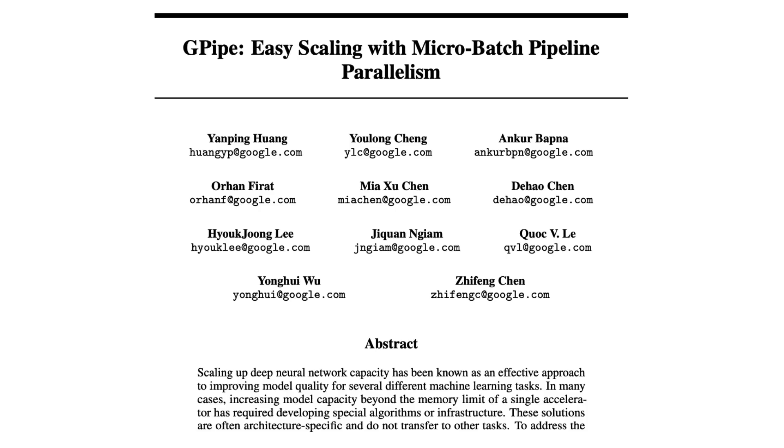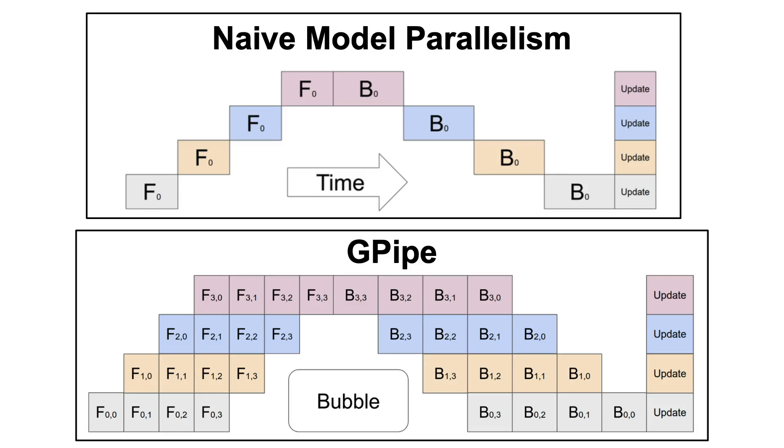The next item is GPipe: Easy Scaling with Microbatch Pipeline Parallelism, which, as the title of the paper suggests, introduces GPipe, which is a pipeline parallelism library developed by Google that allows users to split large neural networks into smaller segments called stages and process them in parallel across multiple devices such as GPUs or TPUs.